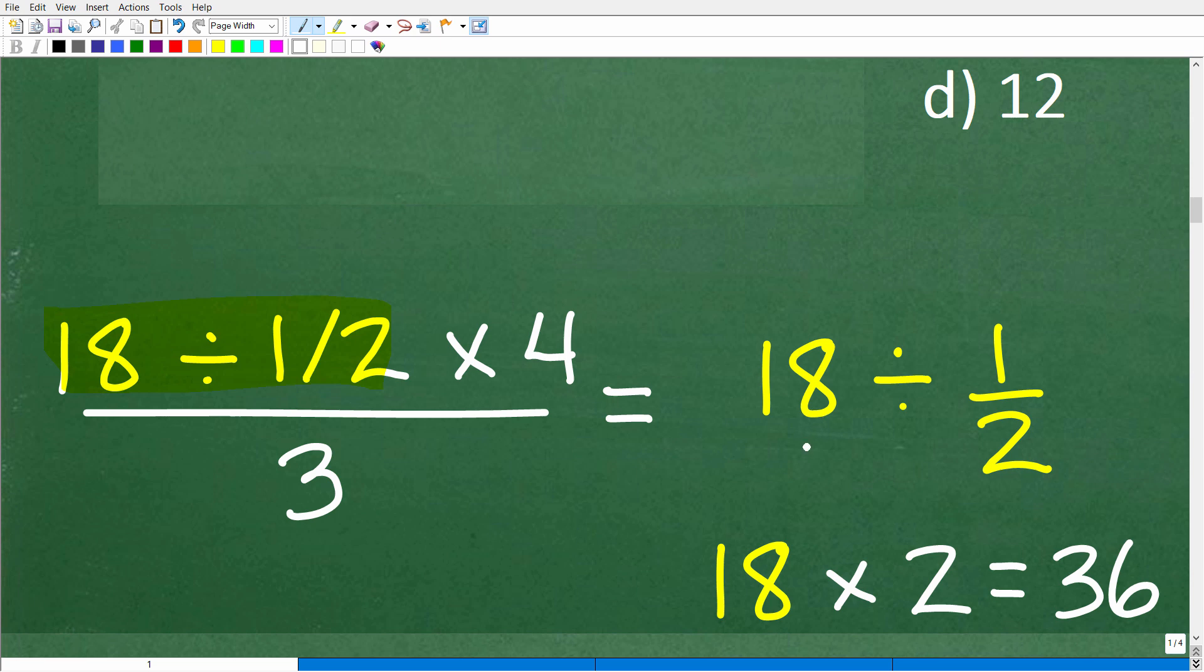Okay, so 18 divided by 1/2. How do we divide two fractions? Now, you might be saying, hey, Mr. YouTube Math Man, I don't see two fractions. Well, you can make any number into a fraction by just simply putting it over 1. So now I can think of 18 as a fraction. 18 over 1 divided by 1/2.